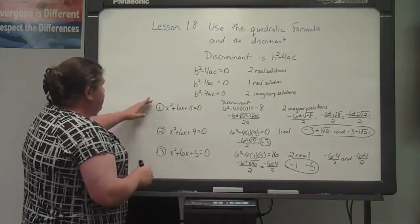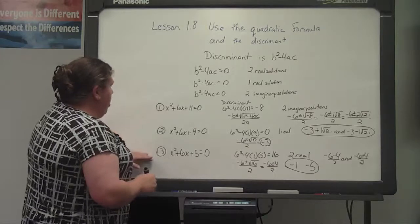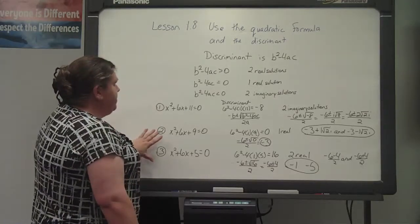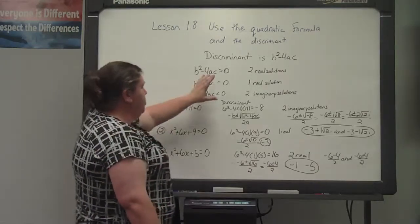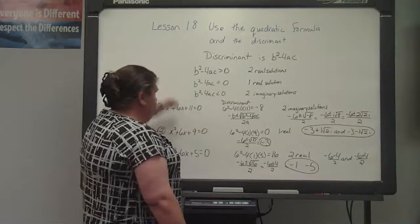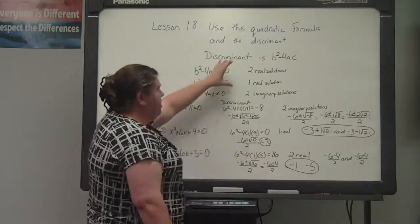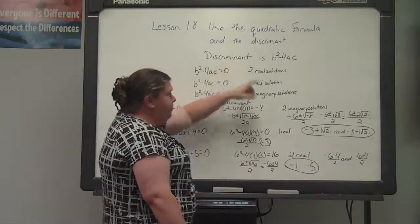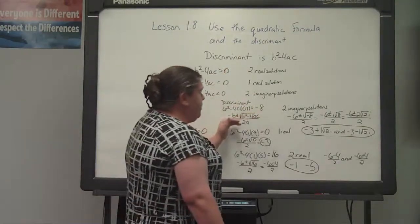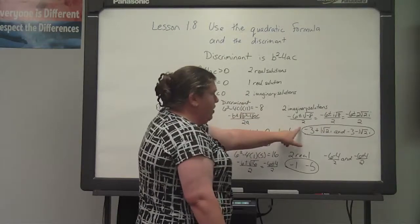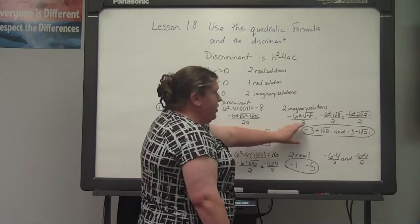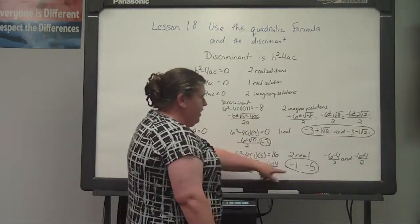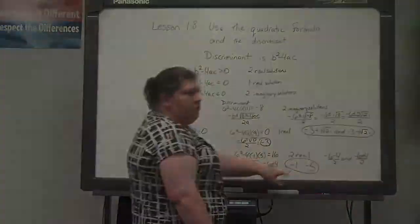So we just solved 3 different examples using the discriminant to let us know what type of answers we're going to get, and then finding the actual answers: our 2 imaginaries, our 1 real, and our 2 real.